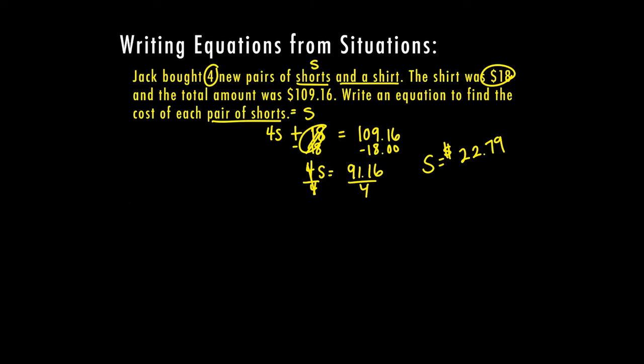$22.79. Now this essentially means that they went and bought four pairs of the same shorts for the same price. It could also mean that the average cost of each pair of shorts is